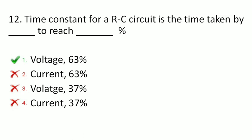Next is: the time constant for an RC circuit is the time taken by what to reach what percent? The options are voltage to 63%, current to 63%, voltage to 37%, or current to 37%. The correct answer is voltage to 63% of its final value. So for RL it is current to reach 63%, and for RC it is voltage to reach 63%.